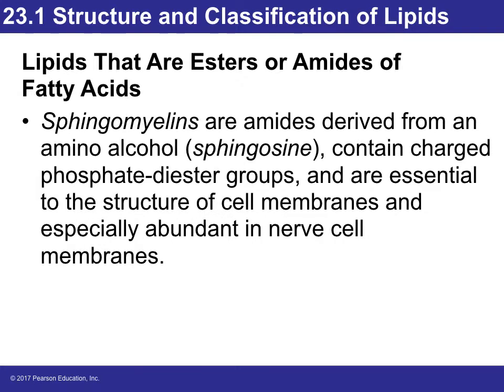Sphingomyelin are amides derived from amino alcohol and they have a charged phosphate diester group. They are essential to the structure of cell membranes and very, very important especially for nerve cell membranes.